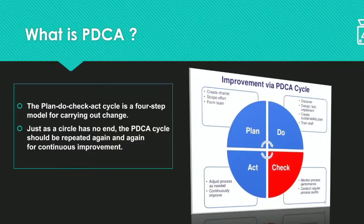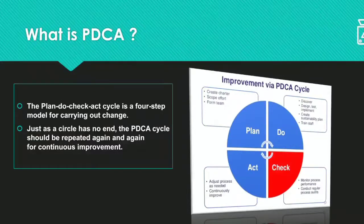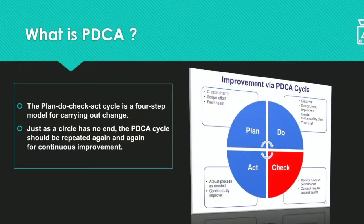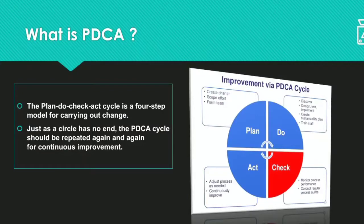Now let us see what PDCA means and what is the main function of PDCA. PDCA means Plan Do Check Act cycle. It is a four-step model for carrying out changes. It is a circle which has no end, and this PDCA cycle should be repeated again and again for continuous improvement. This PDCA cycle is also known as the Deming cycle, Deming circle, Shewhart cycle, control cycle, or the Plan Do Study Act cycle.